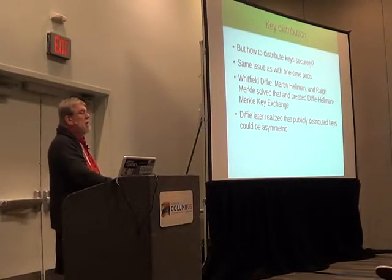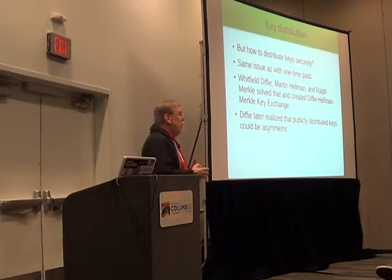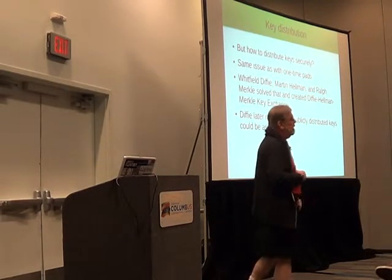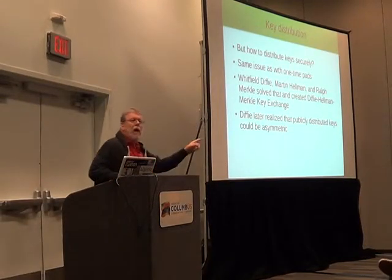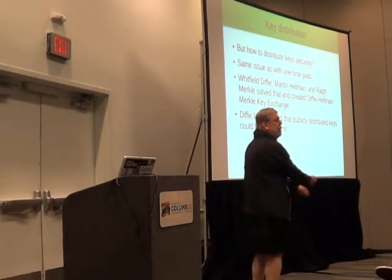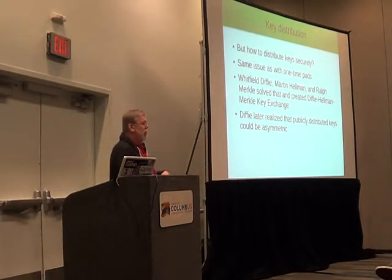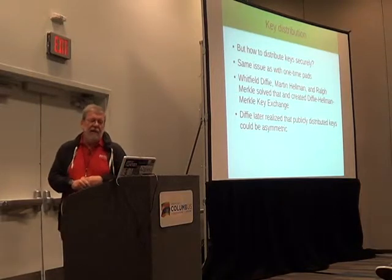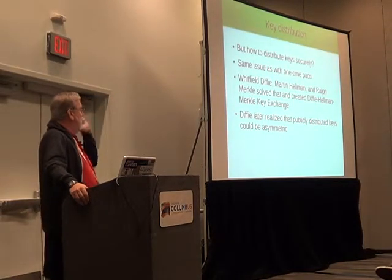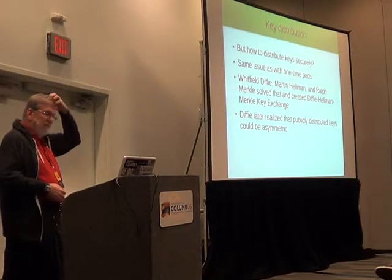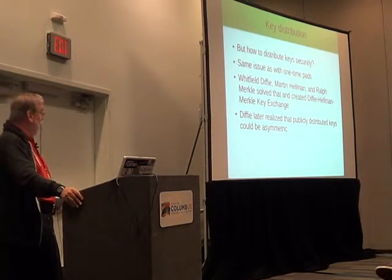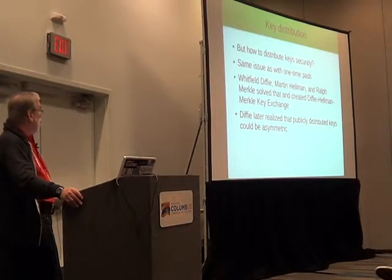Key distribution is still the big problem — how do we exchange keys with each other? If my friend Tom is across the room, I can just walk over and say, here's the key I'm going to use. That's great if we're in the same room and no one is listening in. But what if Tom is at his office and I'm at mine, miles apart? Three people — Diffie, Martin Hellman, and Ralph Merkle — solved that problem and came up with Diffie-Hellman-Merkle key exchange. Martin Hellman has said Ralph Merkle deserves to be named there, so I go with that.